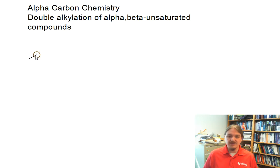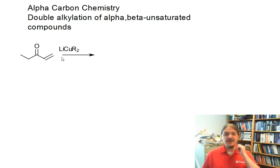I'm just going to start with something fairly simple. Maybe we have this alpha-beta-unsaturated compound. In a previous video, I shared that Gilman reagents, these lithium dialkyl cuprates, will alkylate these things at the beta position because they are a softer nucleophile.